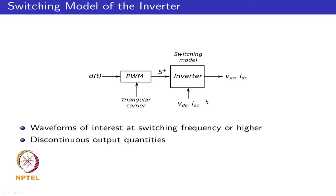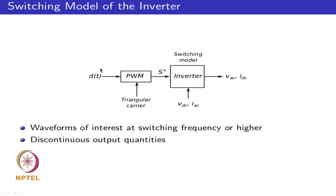The inputs to the switching model are the DC voltage of the inverter, the voltage source inverter, and the AC current, AC output current. These are continuous quantities. Your duty cycle is the output of your controller, which is also typically PI, PID controllers. This is also a continuous quantity. Your PWM action provides the switching function, and the switching function is what then turns the actual switches in an on-off manner.